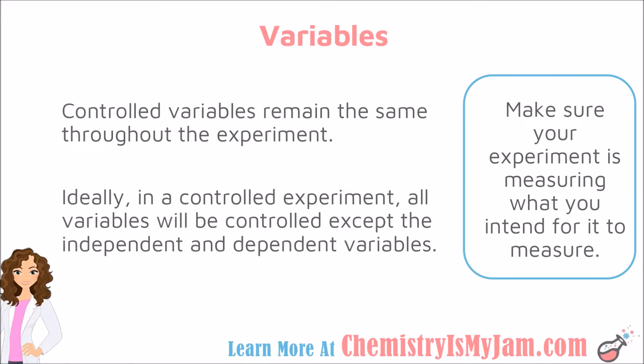Another type of variable that you should be aware of is a controlled variable. Controlled variables remain the same throughout the experiment. The purpose of controlled variables is to make sure that your experiment is measuring what you intend for it to measure — making sure that other things don't sneak in and affect your data. Ideally, in a controlled experiment, all of the variables will be controlled, meaning they will stay the same, except for the independent and dependent variables. That way, the only thing that changes your data are the things that you are actually studying.